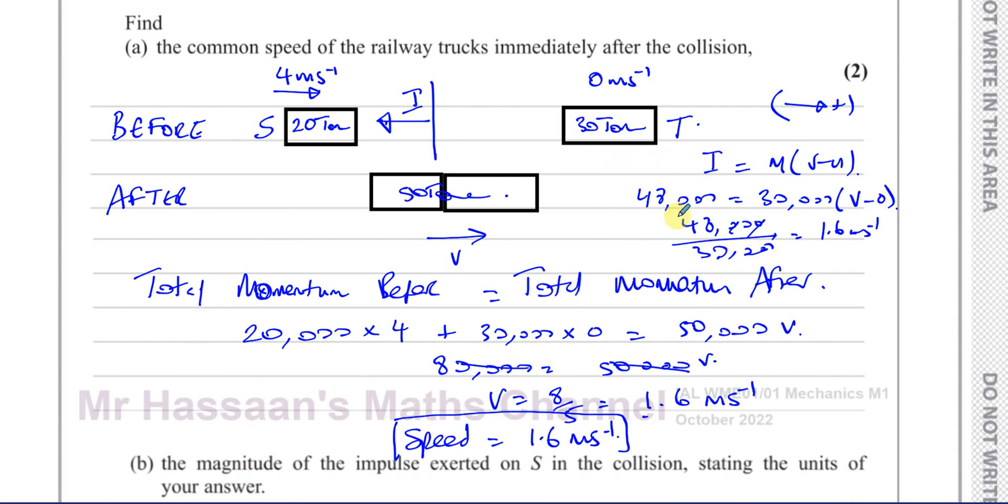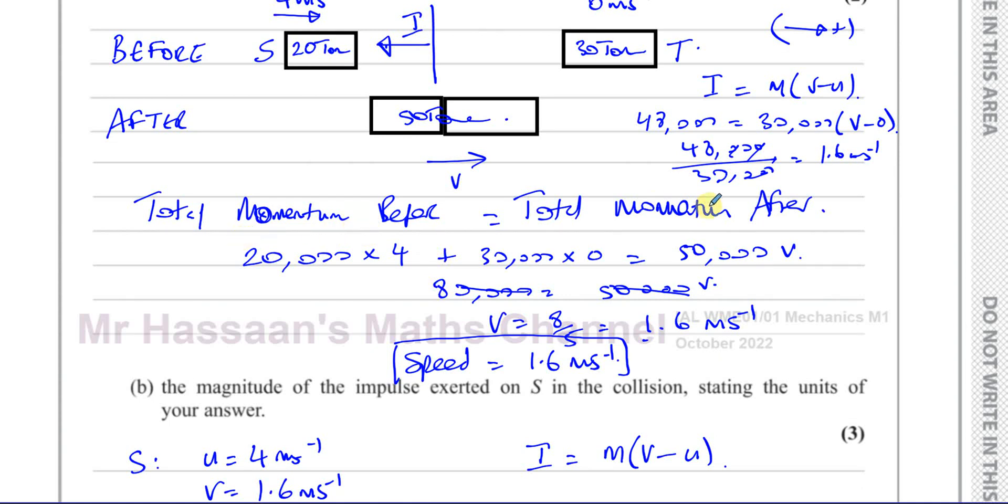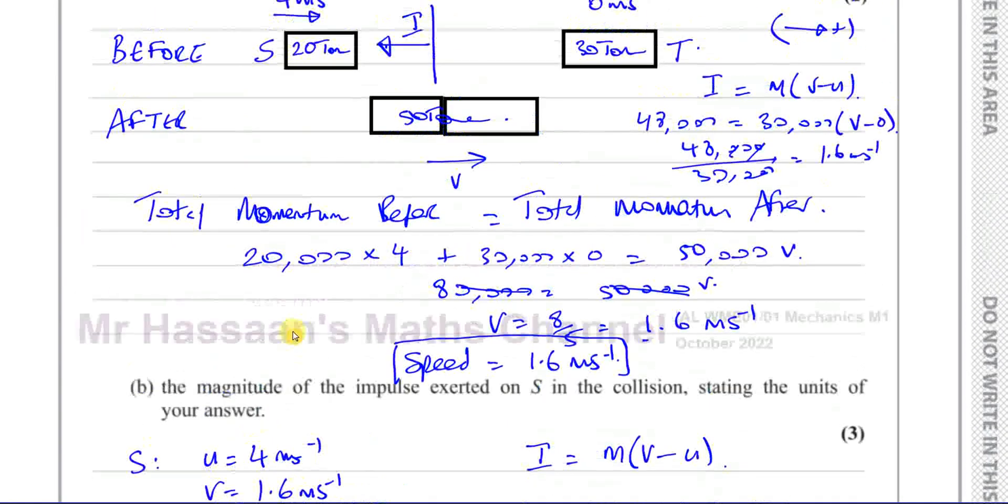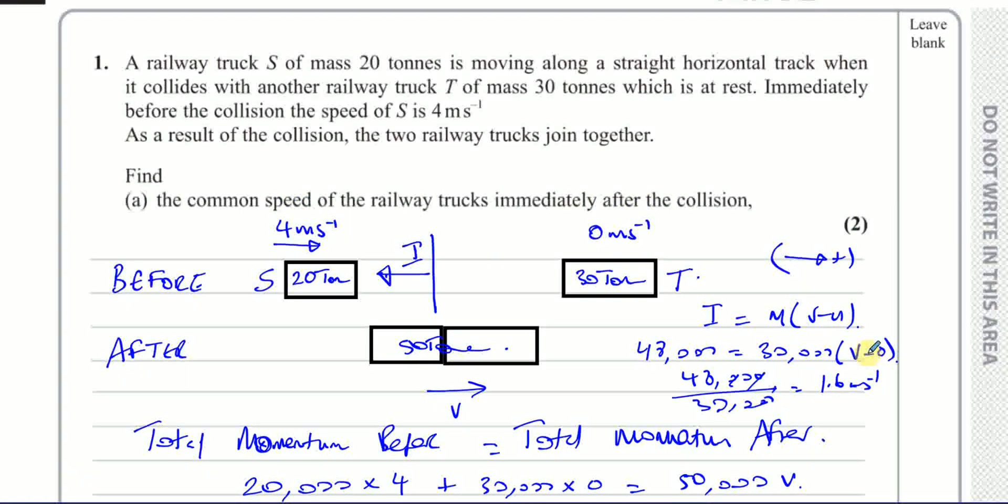So that's an alternative way to work out speed by using the impulse. So you can use a change in momentum, we can even use impulse. But in that case, you'd have to answer part B first and then use it to answer part A. But that's perfectly fine. That's also another alternative way of answering part A. Considering the change in momentum.